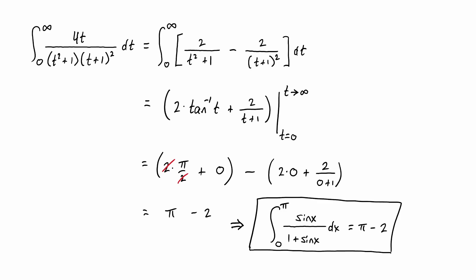So there we go. We get our integral from 0 to π of sin of x divided by 1 plus sin of x. That evaluates to π minus 2.